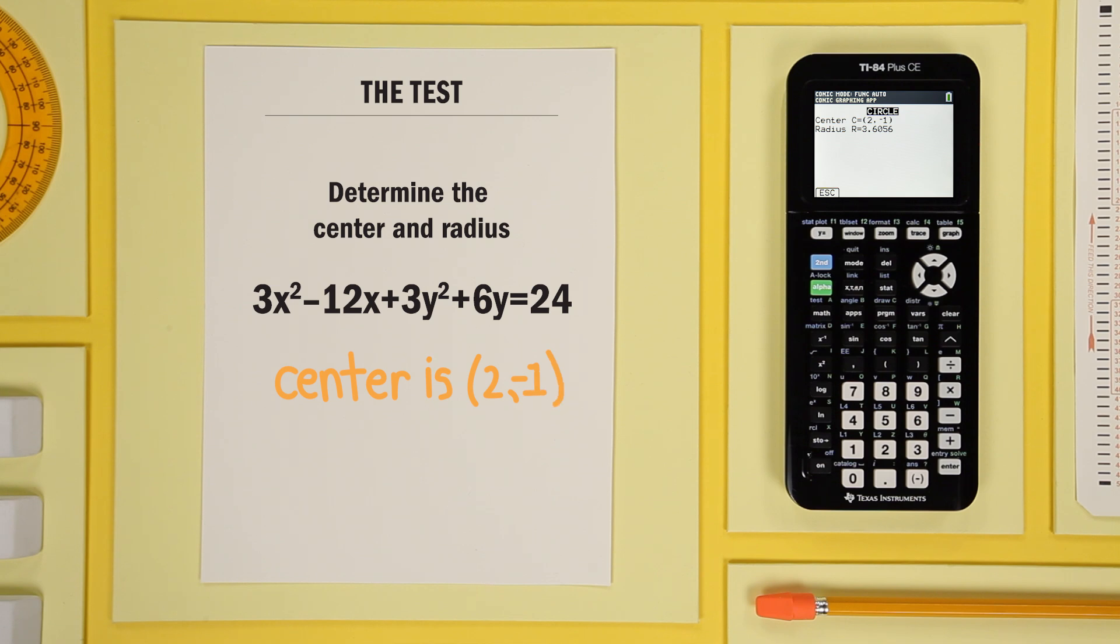The center of the circle is 2 and negative 1, and the calculator rounds the radius to 3.6056.